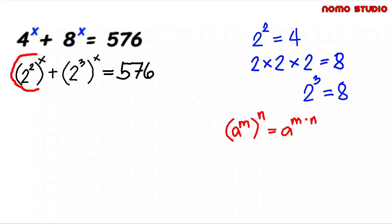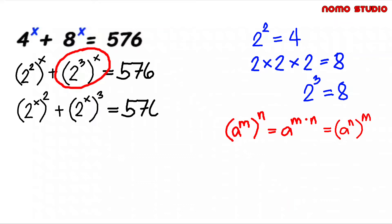So it simply means this can also be written as 2 to the x to the power of 2, simply because this m and n can be interchangeable. Also, this one can be written as 2 to the x to the power of 3. Here we will introduce another variable to substitute the value of this 2 to the x. So we let u equals 2 to the x. This will be u squared plus u cube.